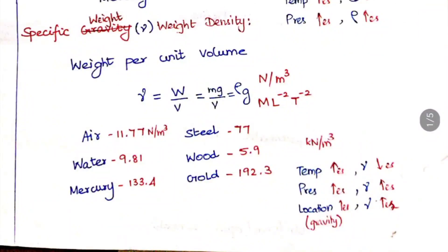The next property is specific weight, also called weight density. It is the weight of matter per unit volume — weight divided by volume. Since weight equals mass times g, specific weight equals rho times g, denoted as gamma. So gamma = rho·g is the relation between mass density and specific weight. The unit is Newton per meter cube, and the dimensional unit is M L⁻² T⁻².